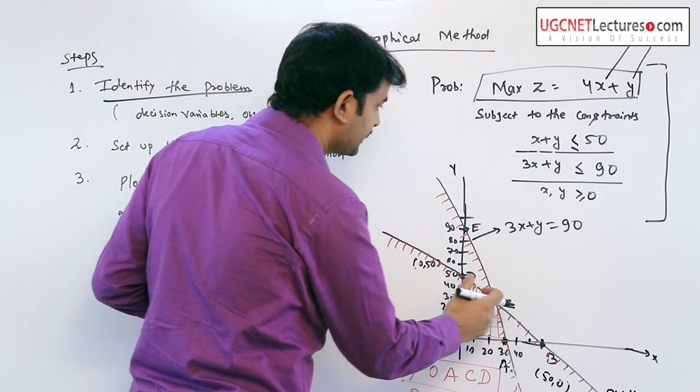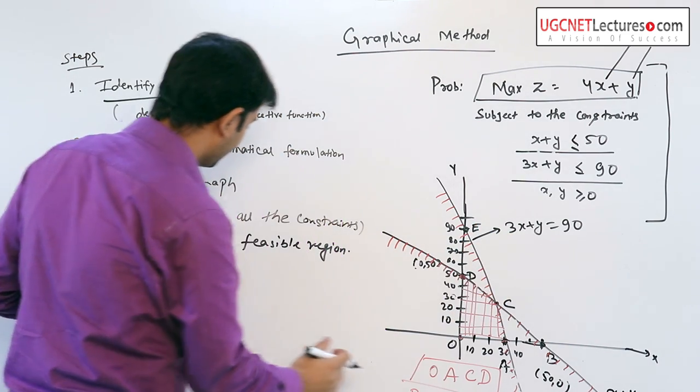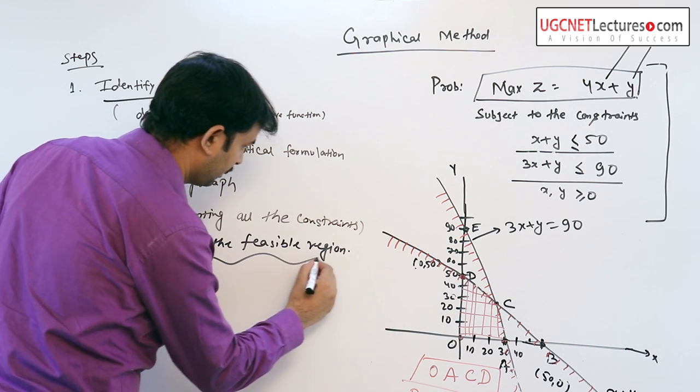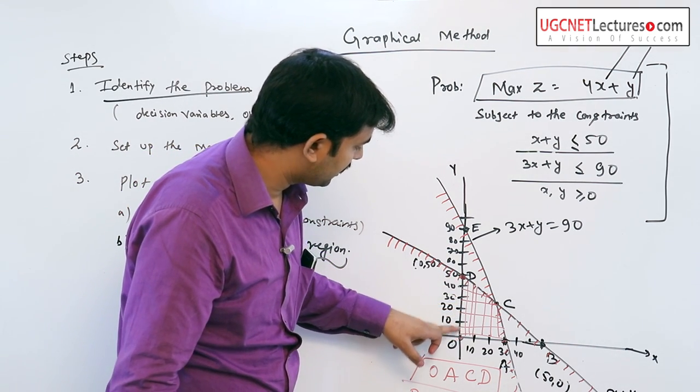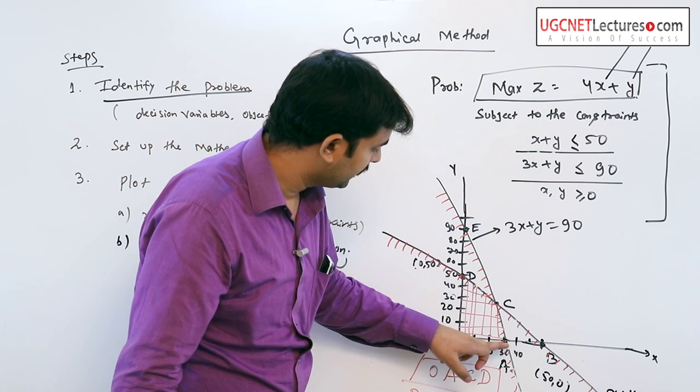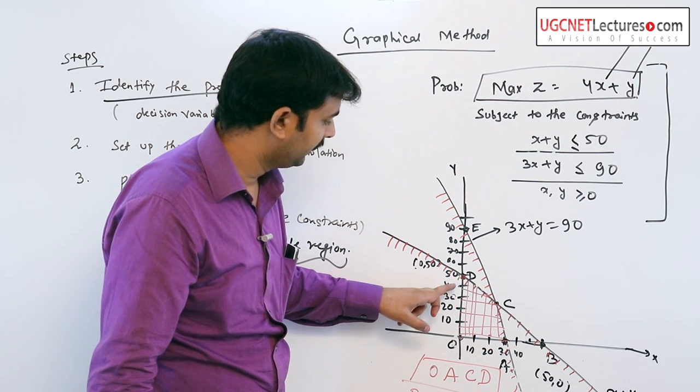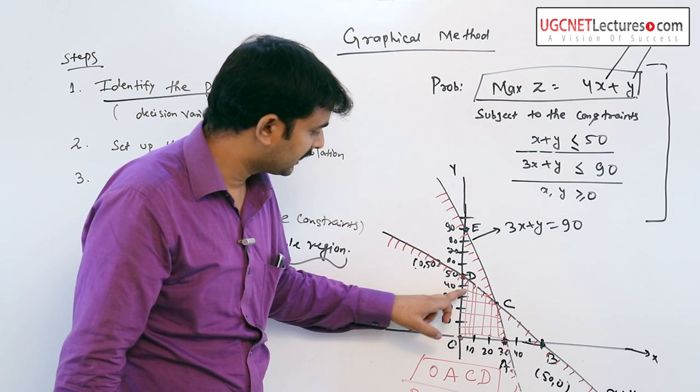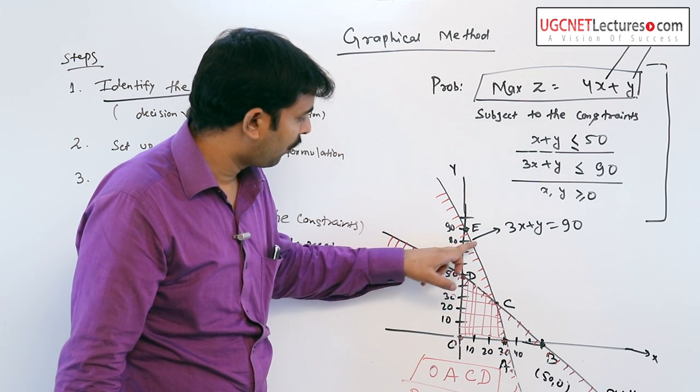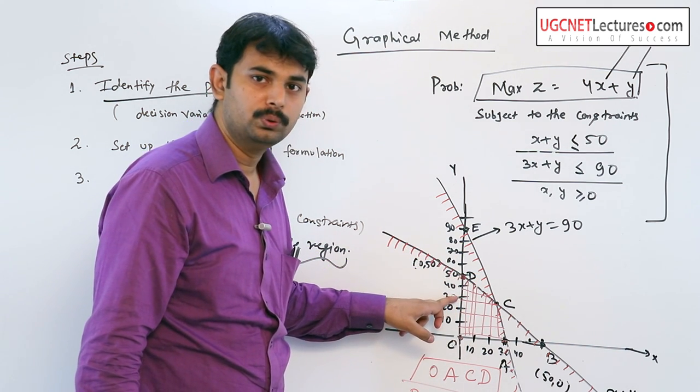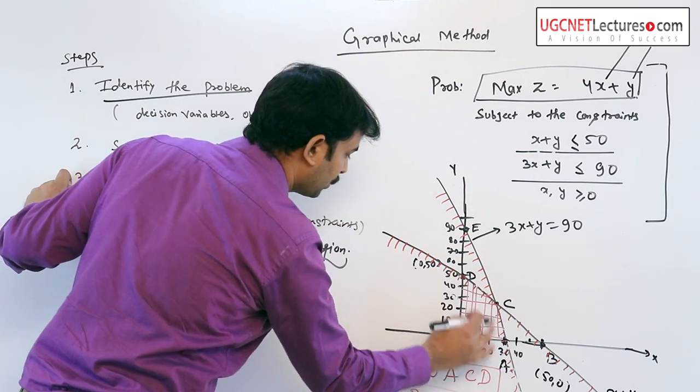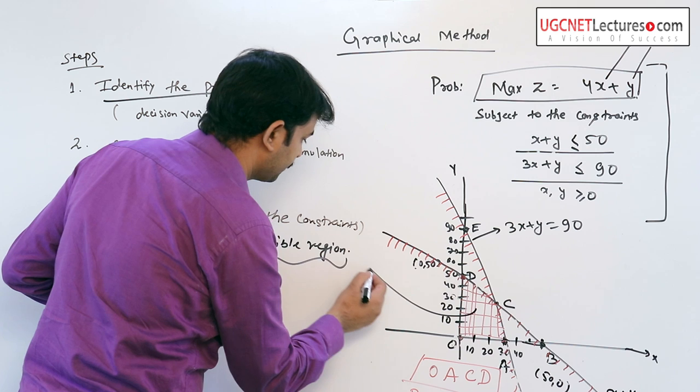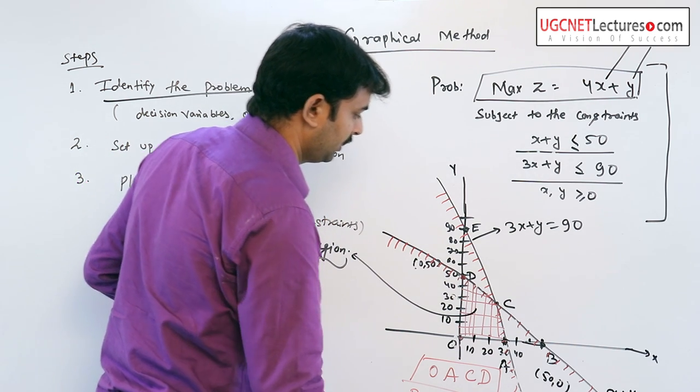The region of our concern is OACD because this region satisfies all the two equations. This region is known as the feasible region.